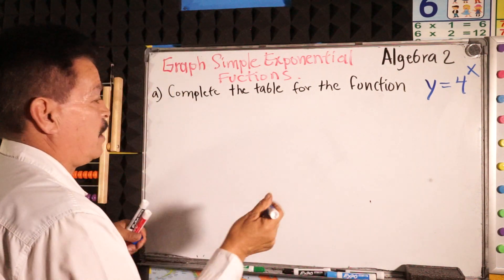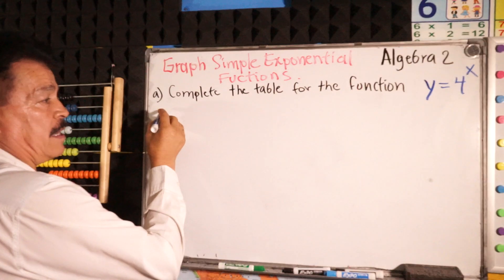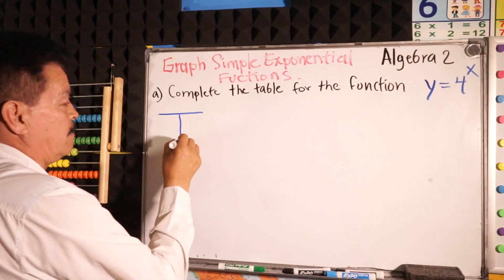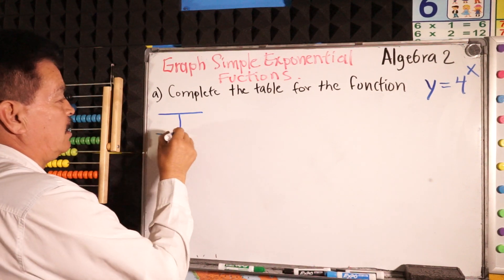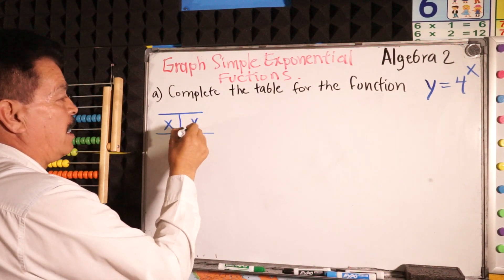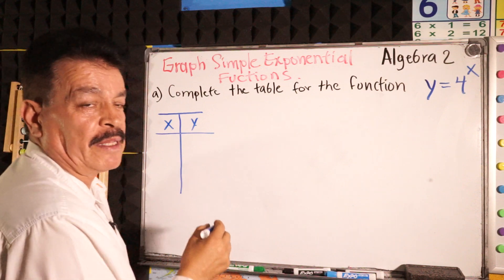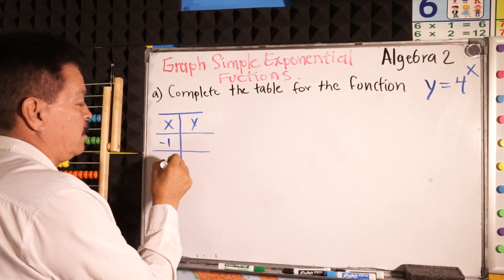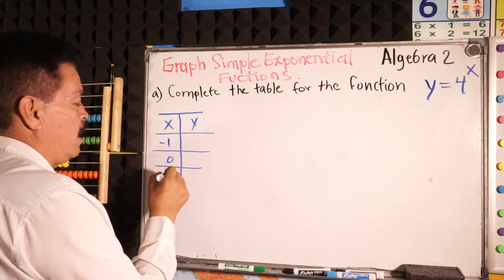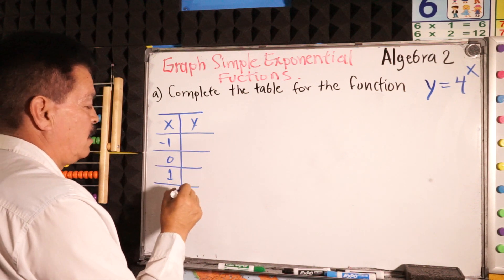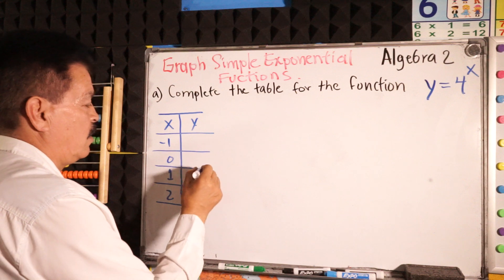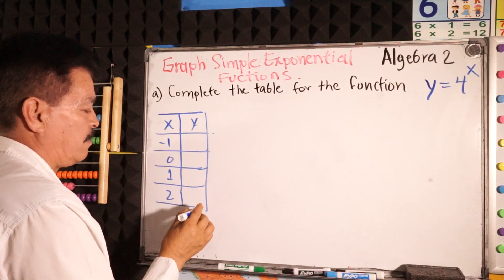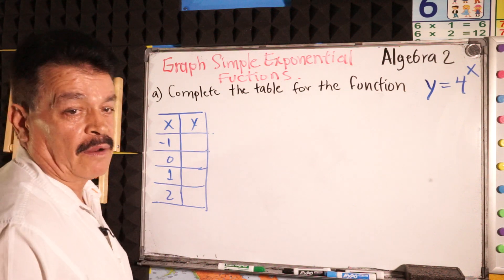First, make the table. I will make the table right here. Our function has x and y. I will give these x values: negative 1, 0, 1, and 2 — small values. So first we have to fill out our table.